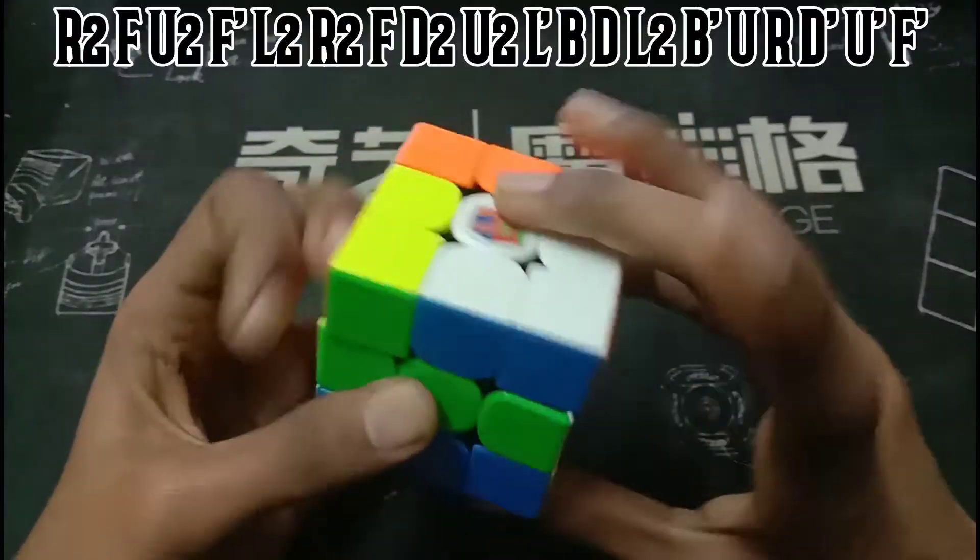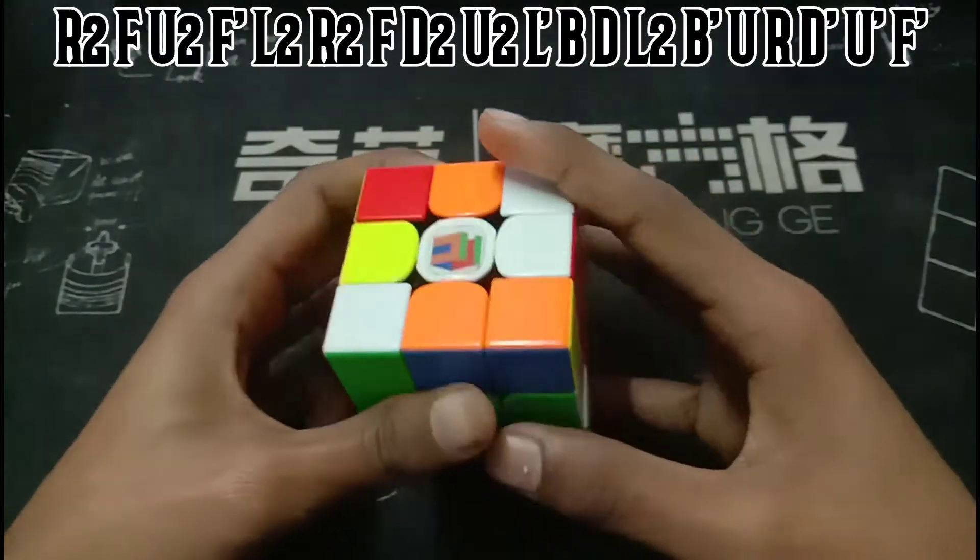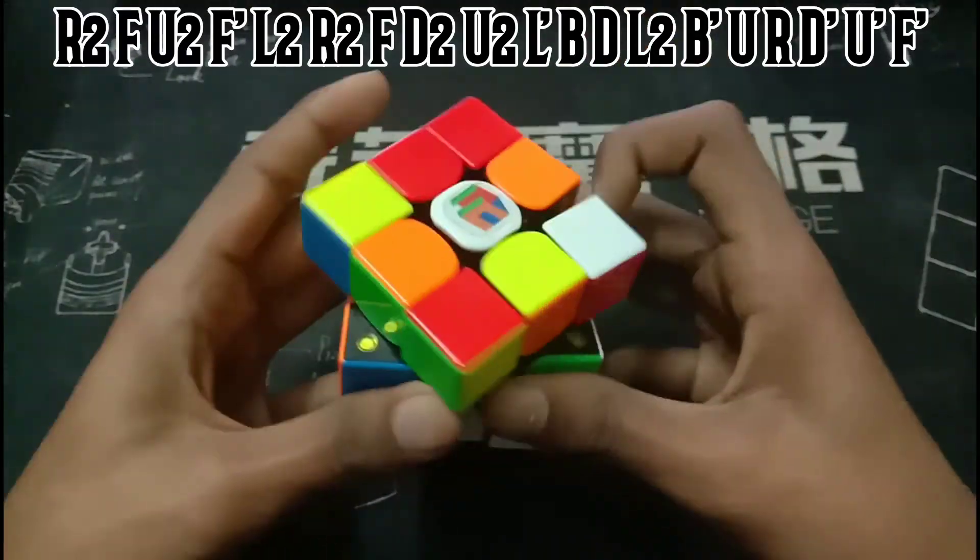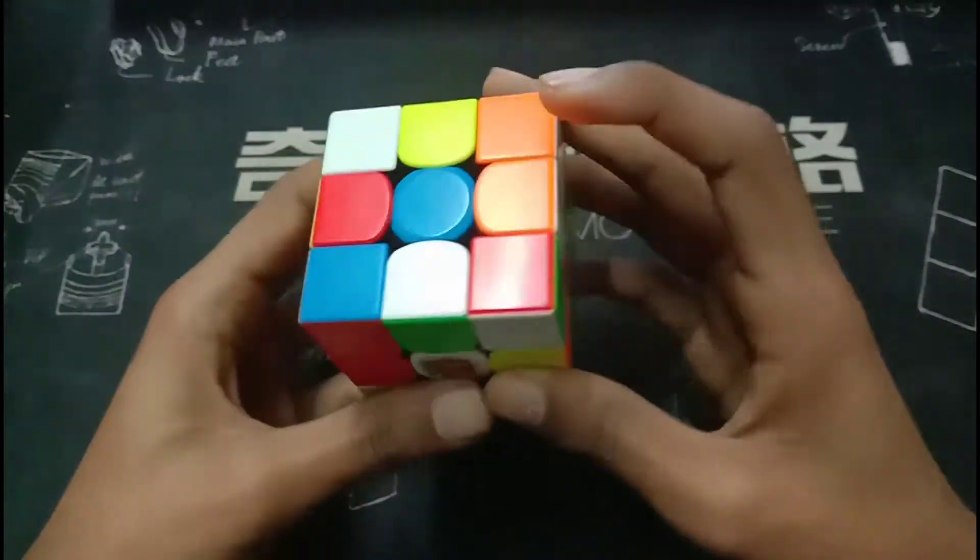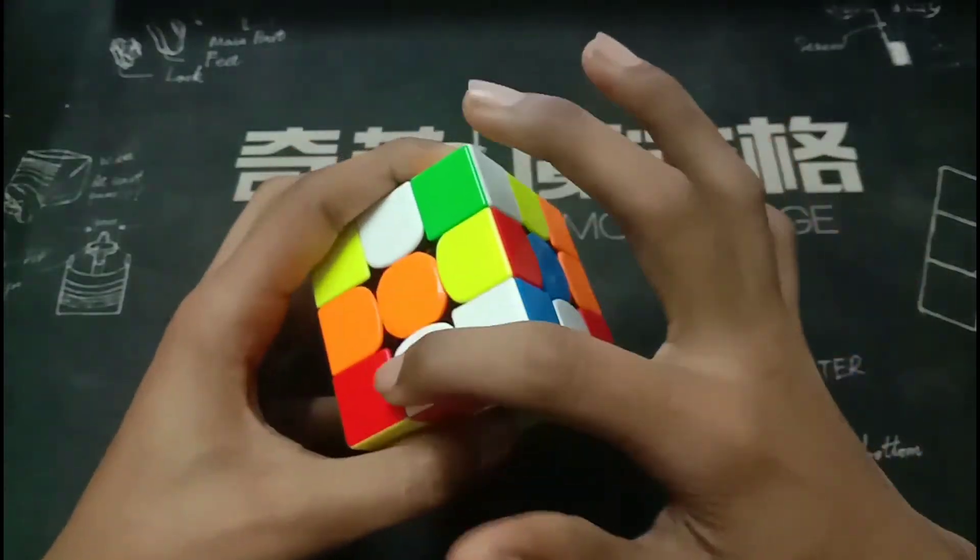The first scramble is on screen. Okay, for this scramble he does white cross. The cross pieces are here, here, here and here.